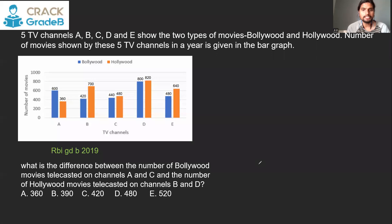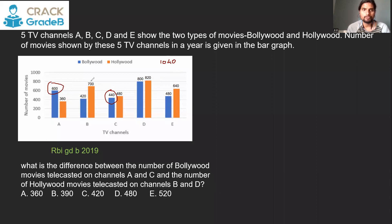Question 4: What is the difference between the Bollywood movies on channels A and C versus the Hollywood movies on channels B and D? Bollywood on A and C: 600 + 414 = 1,040. Hollywood on B and D: 700 + 820 = 1,520. The difference is 480 — option T.